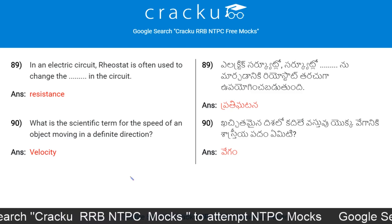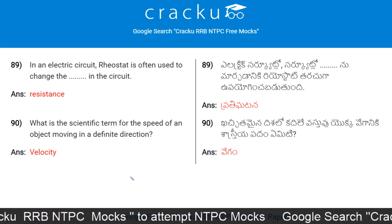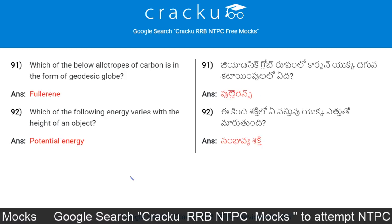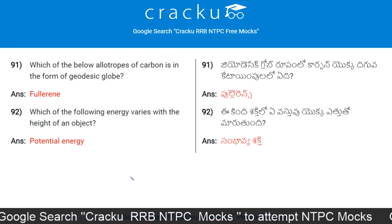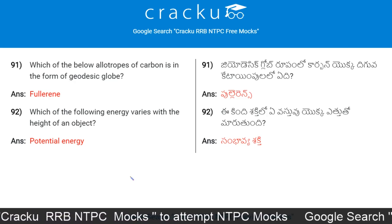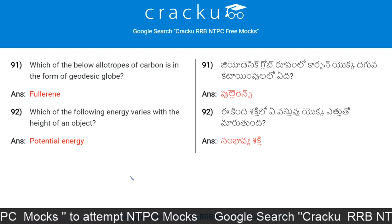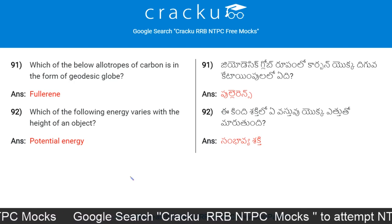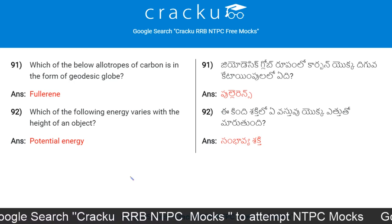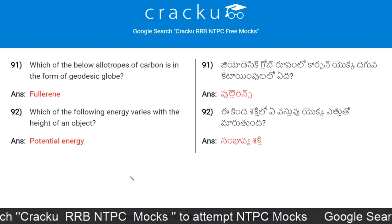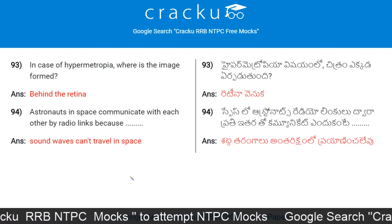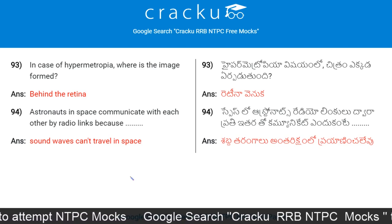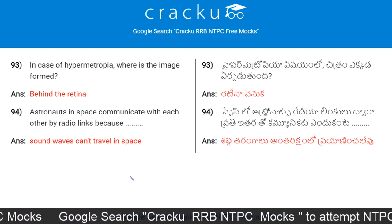The scientific term for the speed of an object moving in a definite direction is velocity. Which allotrope of carbon is in the form of a geodesic globe? Fullerene. Which energy varies with the height of an object? Potential energy. In case of hypermetropia, the image is formed behind the retina.